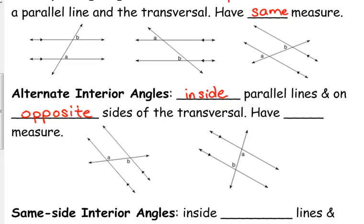You see a couple of different examples there. What do y'all think is the relationship between their measure? It's the same. Now here's the reason. Take your wax paper and slide it down to the bottom parallel line. For example, 3 and A — if you overlap those two parallel lines, what's the relationship between 3 and A? They're vertical, and we know vertical angles have the same measure. That's why alternate interior angles are congruent.